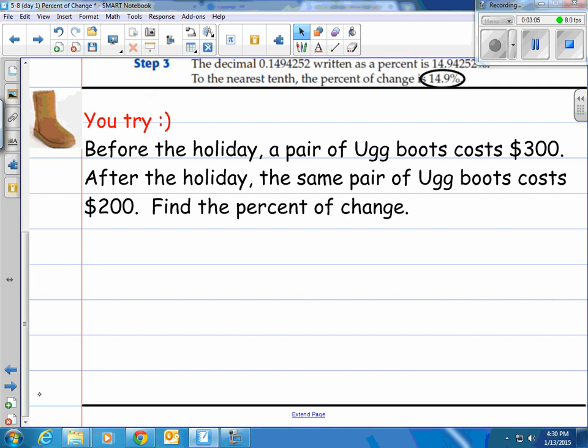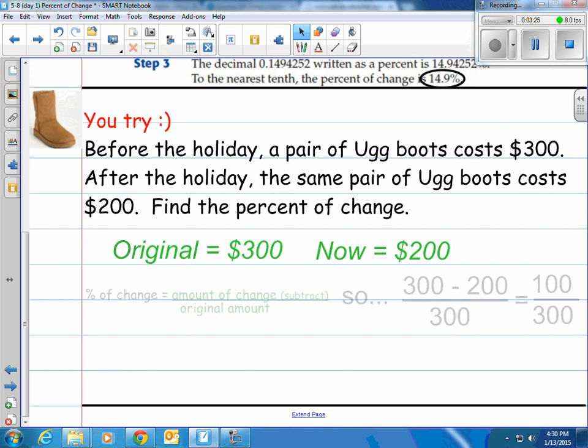You try one here. Before the holiday, a pair of Ugg boots costs $300. After the holiday, the same pair of Ugg boots costs $200. Find the percent of change. Well first off, we know the original was 300 and now they're 200. Chronologically, that's what it would be. So what do we do?